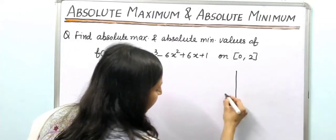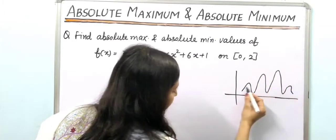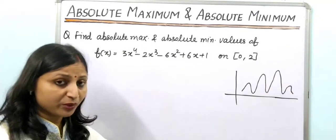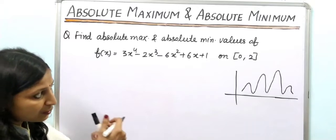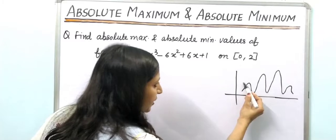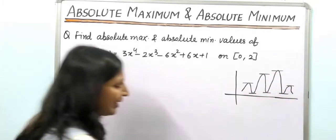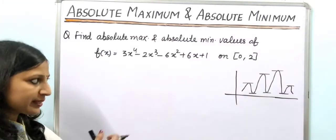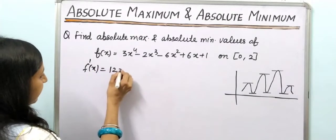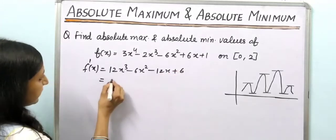For the first step, we find the critical points by computing f'(x) and setting it to zero. So f'(x) equals 12x³ minus 6x² minus 12x plus 6.